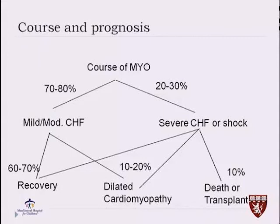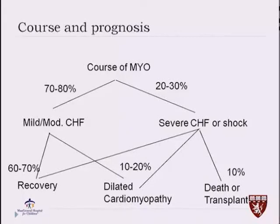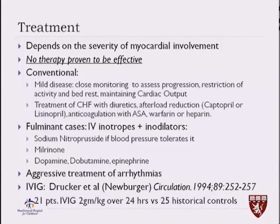The prognosis is favorable in children compared to adults — about 90% will survive, 10% will die. However, of those who survive, not all will recover fully; they might have dilated cardiomyopathy and might need to be transplanted. I exclude neonatal myocarditis from this because neonatal myocarditis is very progressive and survival is only 35%. The treatment of acute myocarditis depends on the severity of myocardial involvement, and no therapy has been proven to be effective.